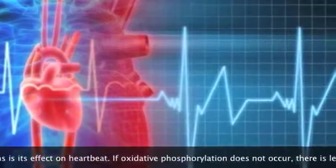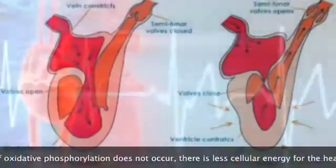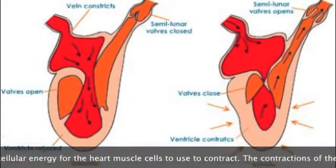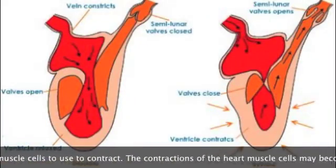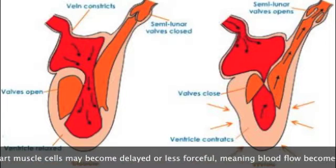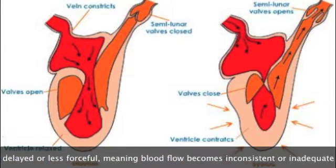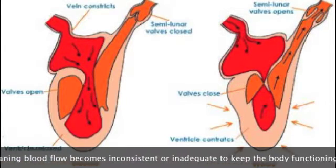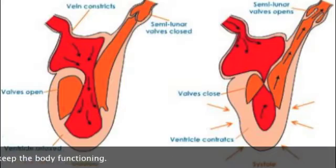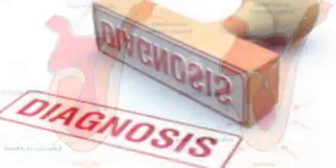One of the syndrome's most life-threatening symptoms is its effect on heartbeat. If oxidative phosphorylation does not occur, there is less cellular energy for the heart muscle cells to use to contract and beat. The contractions of the heart muscle cells become delayed or less forceful, meaning blood flow becomes inconsistent or inadequate to keep the body functioning.